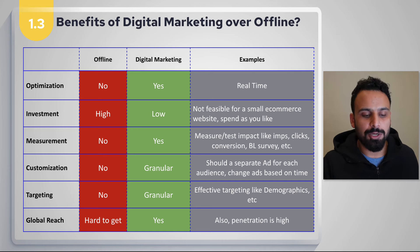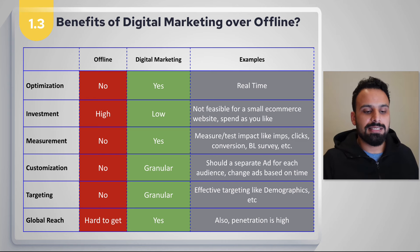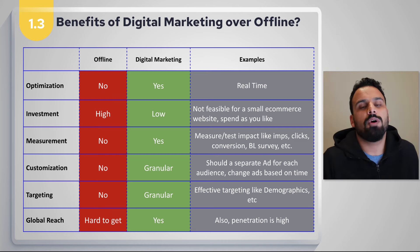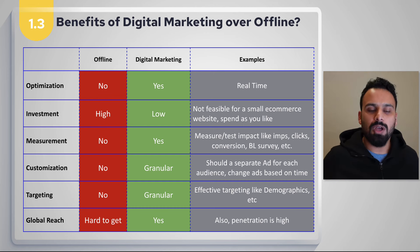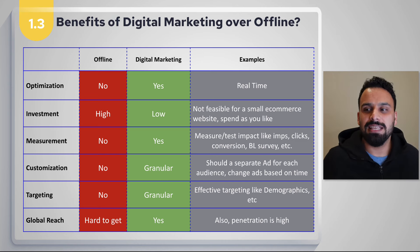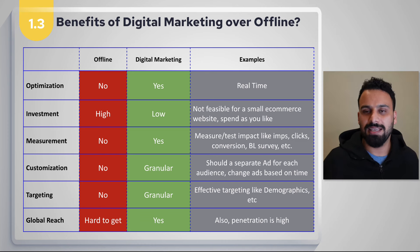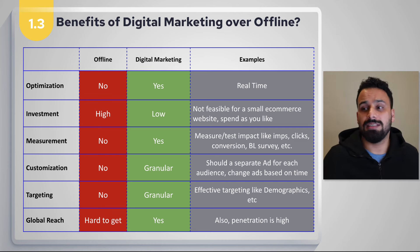Let's look at the benefits of digital marketing over offline. The first is optimization. In offline, it's almost impossible to optimize mid-campaign. For example, if you launch a TV campaign for 10 days and on day three there are no sales, you can't easily stop or change it — the insertion orders with TV and radio stations are locked in once booked.